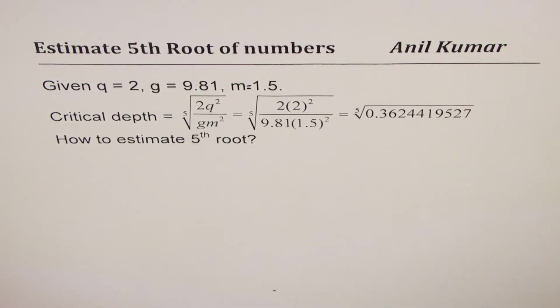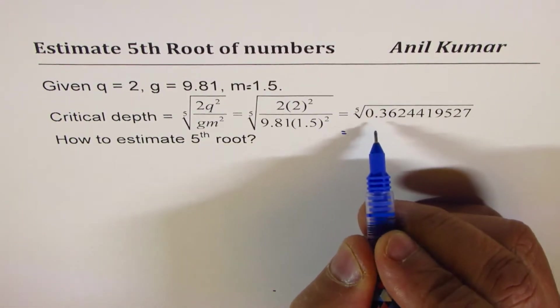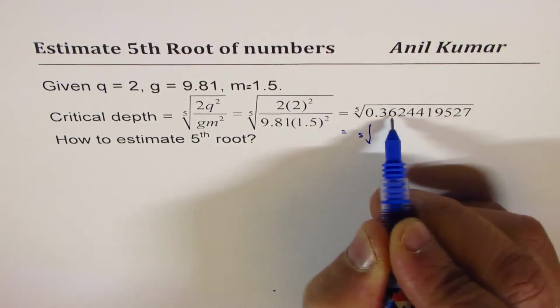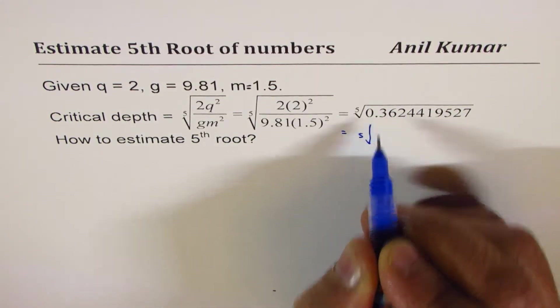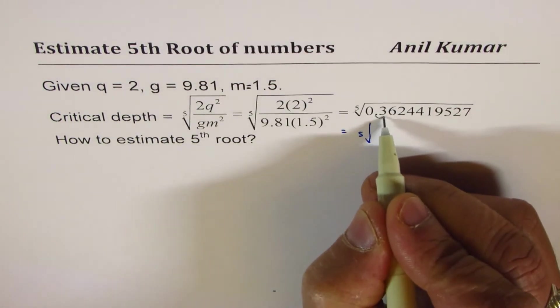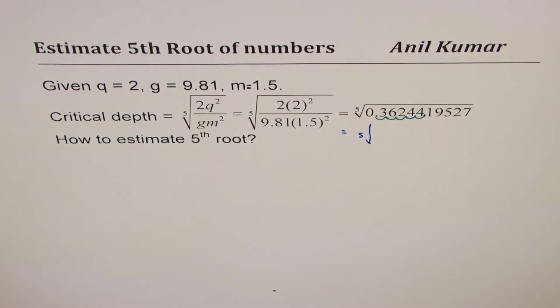Now if we just look into what you have there—fifth root means if I move my decimal five places, one, two, three, four, five, then what I get here is a number which is 36244.195 times 10 to the power of 5.